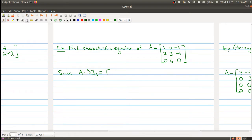So let me do that. So I end up with 1 minus lambda, 0 minus 1, 2, 3 minus lambda, minus 1, and 0, 6 minus lambda.